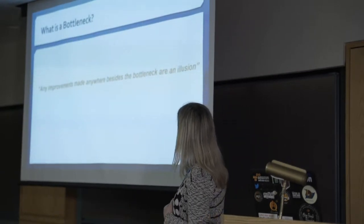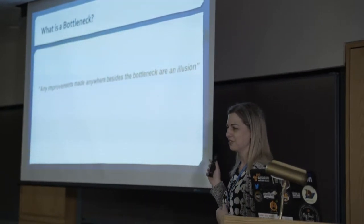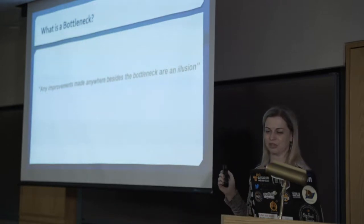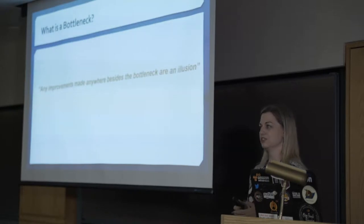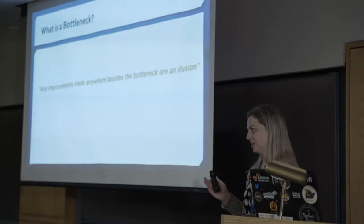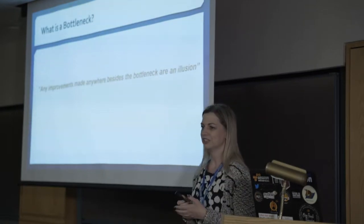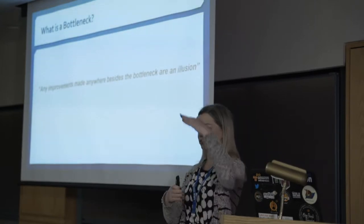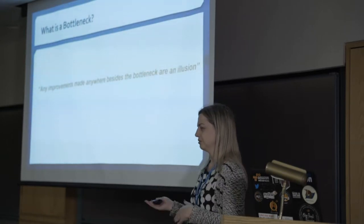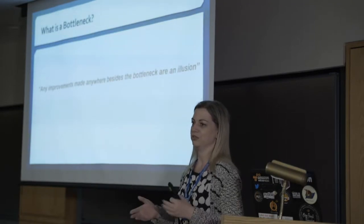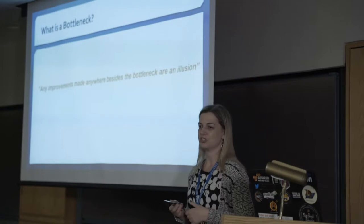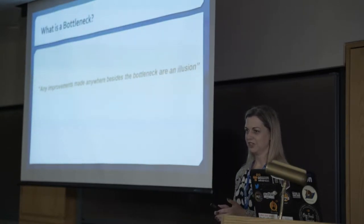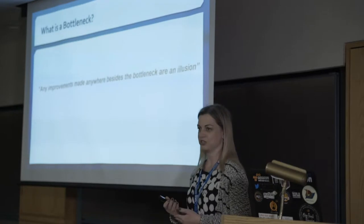Around that time I read The Phoenix Project, which contains a key statement: 'Any improvements made anywhere besides the bottleneck are an illusion.' If you fix things before your bottleneck, you make it worse because throughput increases but the bottleneck remains. If you improve things after your bottleneck — say deployment — your operations team just sits waiting for work. This really emphasizes why it's important to identify and fix the biggest bottlenecks first.